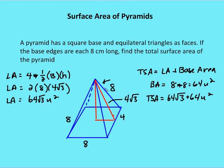Let's find the lateral surface area first. I have a lateral edge that's 8 and base edges that are 8 as well. I need to figure out what the slant height is. I've constructed a 30-60-90 triangle — as I draw my slant height, which is really the altitude for one of the faces, I break the base edge into two congruent segments of 4 and 4. My lateral edge of 8 is the hypotenuse, so I have a 30-60-90 triangle. The slant height is going to be 4√3 — it's the side opposite the 60-degree angle.